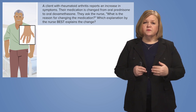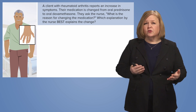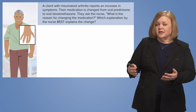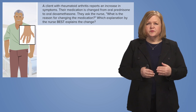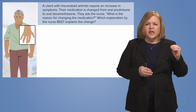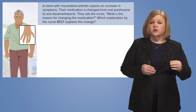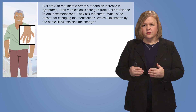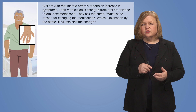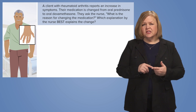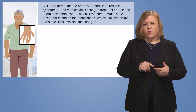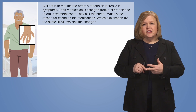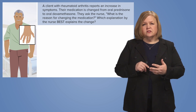I have abnormal findings, so I know I'm going to need to do something. Just documenting about it would not be the best thing. The client's medication is changed from oral prednisone to oral dexamethasone, so you're going to try and think: why would we go from oral prednisone to oral dexamethasone for a client who has an increase in symptoms?